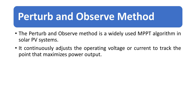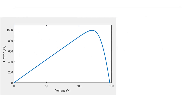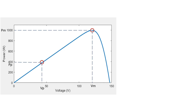The perturb and observe method is a widely used MPPT algorithm in solar PV systems. It continuously adjusts the operating voltage or current to track the point that maximizes power output. Maximum power Pm can be achieved if the PV voltage is Vm. Let Pp and Vp be the power and voltage values at the previous operating point, and P and V be the power and voltage values at the current operating point.